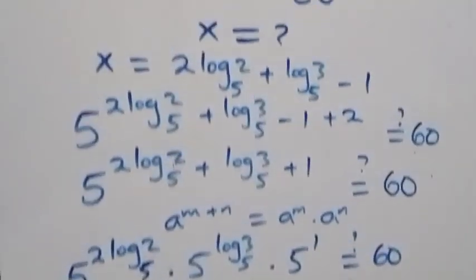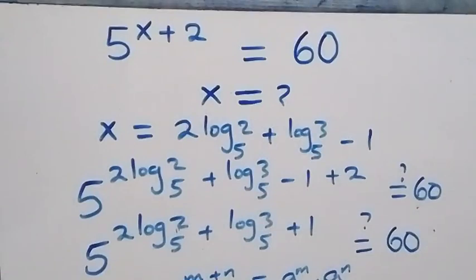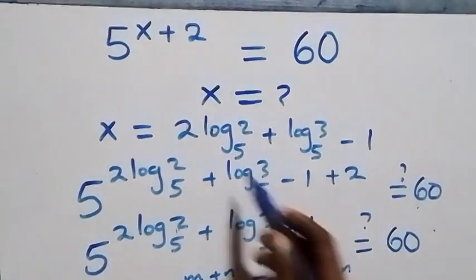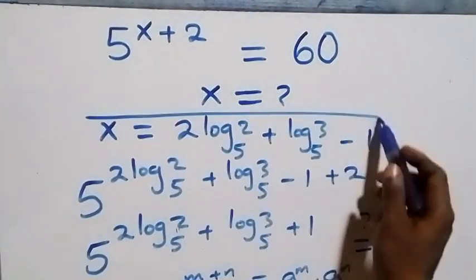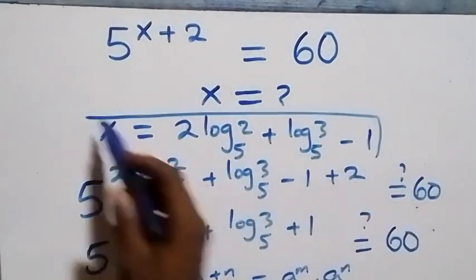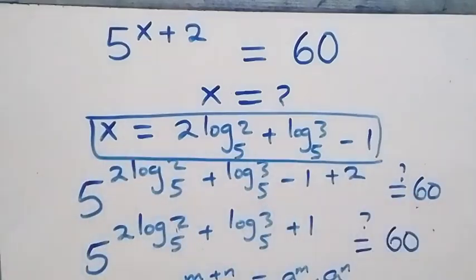Hence we conclude that x equals 2 log₅2 plus log₅3 minus 1 satisfies the given problem. Thank you for watching — don't forget to subscribe for more videos, turn on the notification bell, share this video, give it a thumbs up. See you in the next class, bye for now.